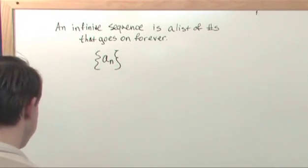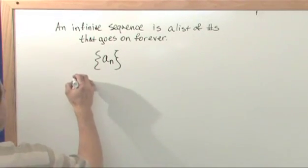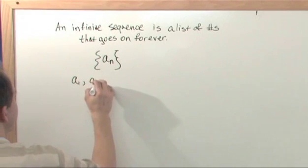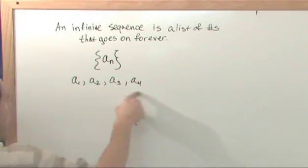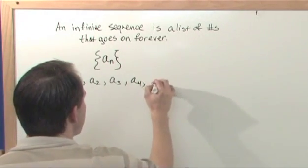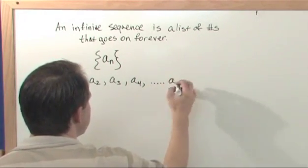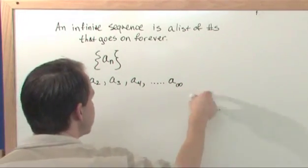These curly braces usually just mean that this is a sequence. So what this would mean is that the sequence would be a1, a2, a3, a4, and notice these are not added together or anything. These are just numbers separated by commas, and it would go on forever to a sub infinity. It would go on to a sub 1 million or whatever.